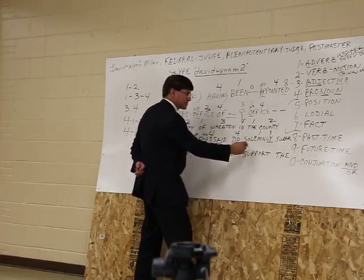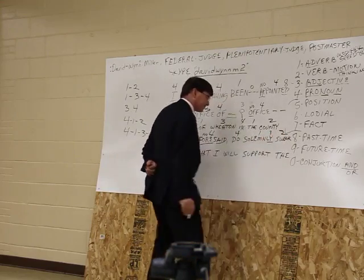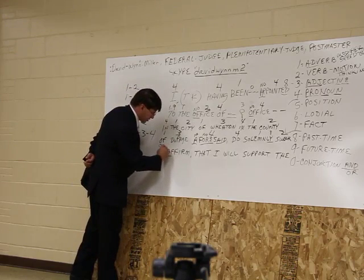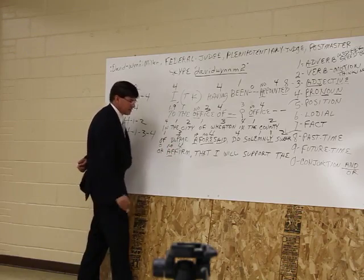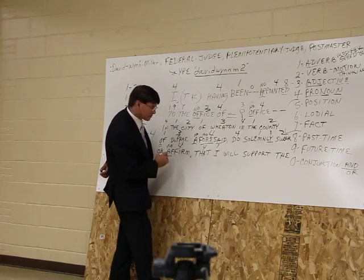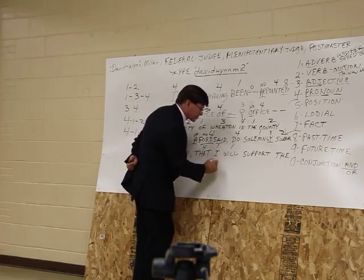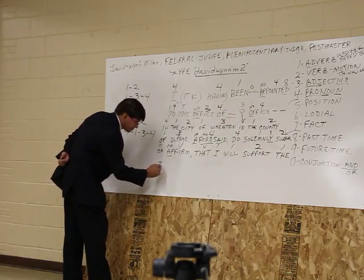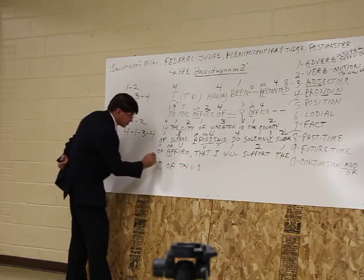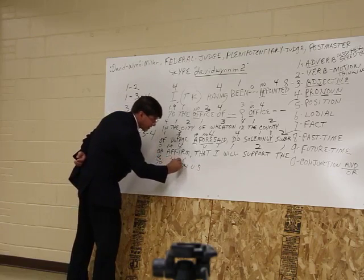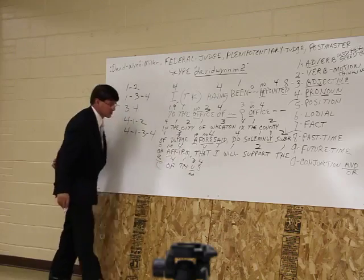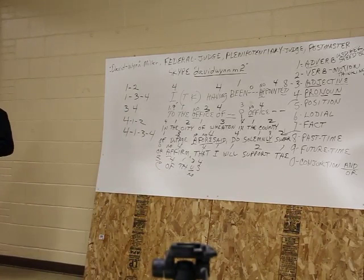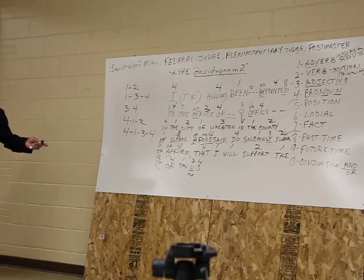'Do' is a pronoun modified by the adverb 'solemnly,' which modifies the verb 'swear.' Or in the word 'affirm' — which means no contract — as a pronoun. 'That I will' — 'that' is a pronoun, 'I' is an adverb, 'will' is an adverb, 'support' is a verb, 'the' is an adverb. Then the Constitution of the U.S. would be a verb, adjective, pronoun, adverb, adjective, pronoun — and 'united' means no citizen. Where's my prepositional phrase — five, six, and seven? That's a $25 million fine and 30 years in prison. He's carrying a gun and a badge without authorization of an oath of office — that's what you've got.